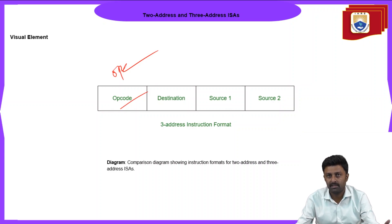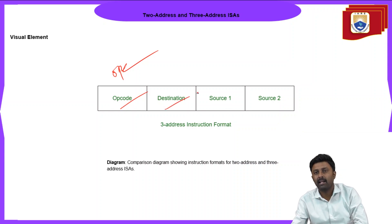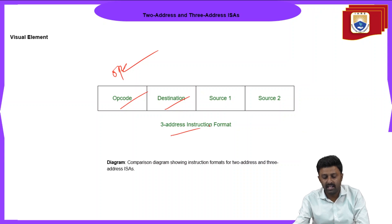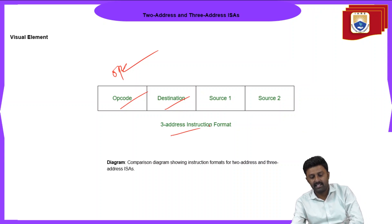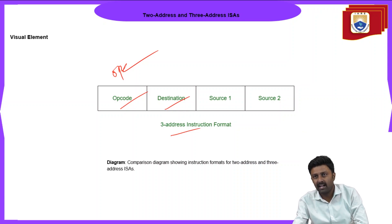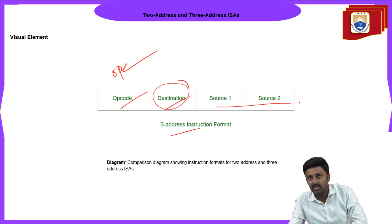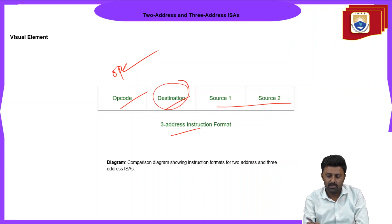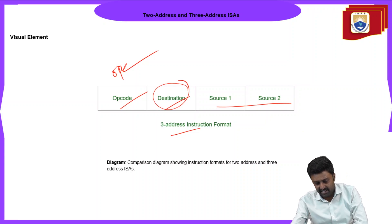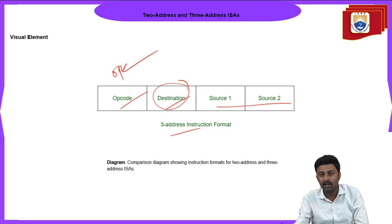If there are more than two operands, we have two-address and three-address ISA formats. In the three-address instruction format, after the opcode, the first field is the destination, and the next two are source one and source two. The previous example showed the two-address instruction format. Once we know how instructions are written in assembly language, we can proceed with our discussion of assembly language instructions.